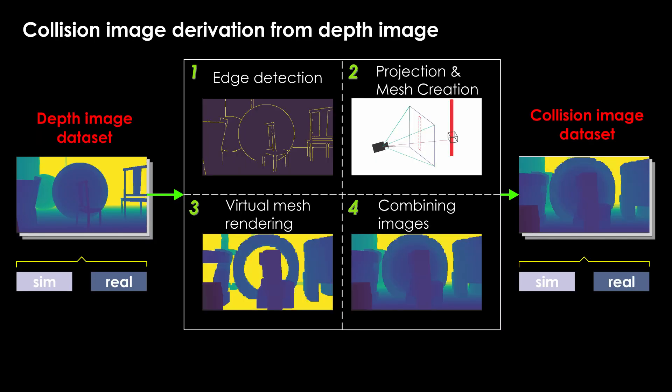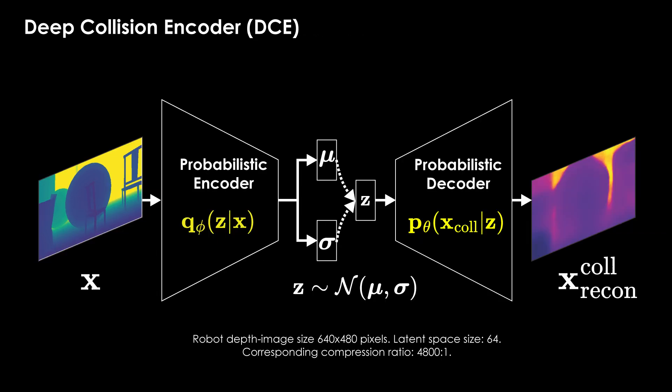To efficiently encode depth images and utilize them for collision-free navigation, we first inflate the objects in each image by the size of the robot. We create virtual robot-sized meshes centered at 3D points corresponding to the edge pixels in the depth image and render them. These images are then combined with range-adjusted depth images to obtain a collision image that accounts for the robot size. We train the deep collision encoder, or DCE, to encode depth images into a highly compressed latent representation from which collision information can be derived using a decoder.